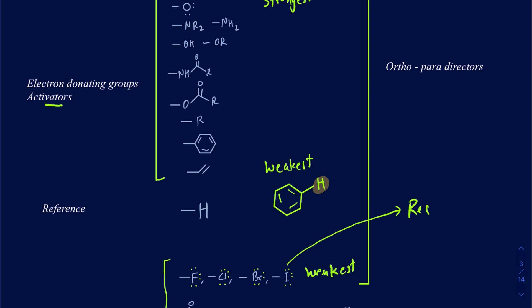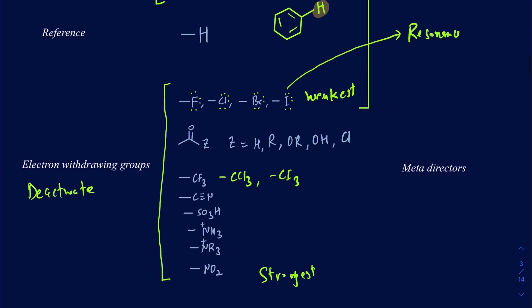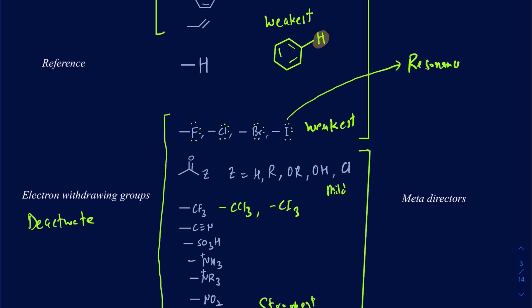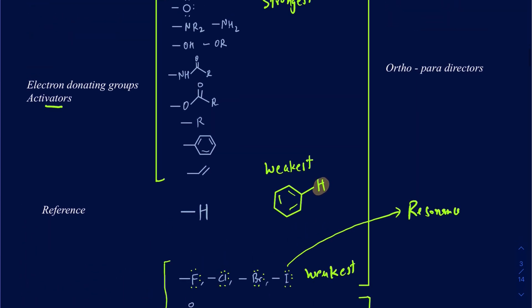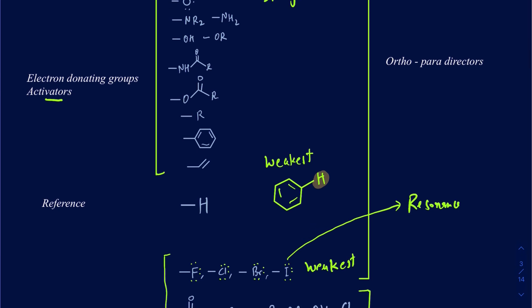Halogens are electron withdrawing groups because of the inductive effect, but they still direct ortho and para substitutions because of the resonance effect. The rest of the electron withdrawing groups are going to be your meta-directors. Among them, the carbonyls are going to be your mild deactivators, and then the remaining groups are relatively strong deactivators.